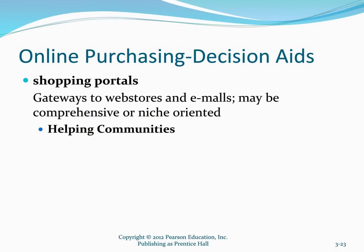Shopping portals are a gateway to web stores. Shopping.com is one example; eBay is another, since it offers shopping at fixed prices in addition to its auctions. There are also helping communities — social communities that help members find goods and services and evaluate their quality. One example is Yub.com, an online mall where you can meet people from around the world, discuss products and trends, shop at various online retailers, earn discounts as a member, and earn additional discounts by helping others make purchases from the site.